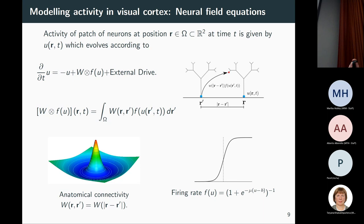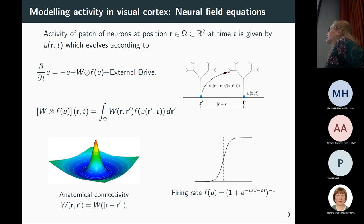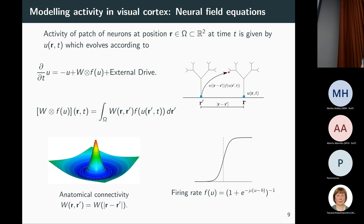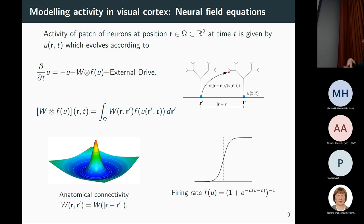We usually take this connectivity function to depend only on the distance between R and R-prime, and take it to have a Mexican hat shape. This corresponds to connections to locally neighbouring neurons being excitatory — promoting activity — while further-away connections have longer-range inhibition, damping down activity. We take the firing rate function to have a sigmoidal shape with a threshold between low and high firing rate, where mu describes the slope at the threshold.